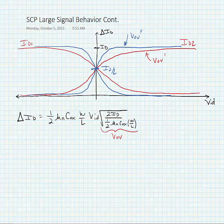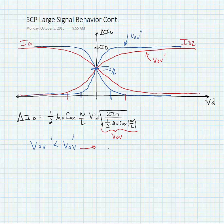We can discern a couple of things from these curves. If we use a smaller VOV, we get a smaller usable range for the device — the usable range being only where the currents are changing. If we use the larger VOV case, we get more usable range.